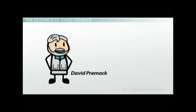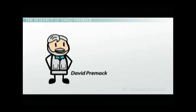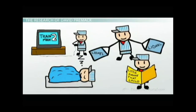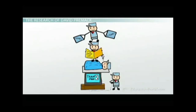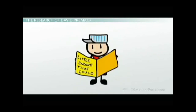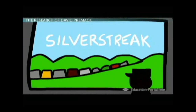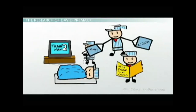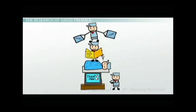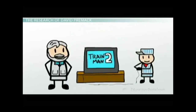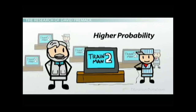David Premack was a psychologist in the 1950s and 60s who became interested in studying the internal motivation for particular behaviors. Premack argued that when you consider all of the possible behaviors you might do — such as when presented with free time — you could rank-order your preference for each behavior depending on your personality and needs at the time. For example, some people might choose to read a book during their free time, while others would choose to watch a movie instead.